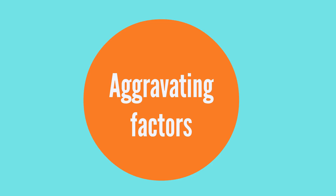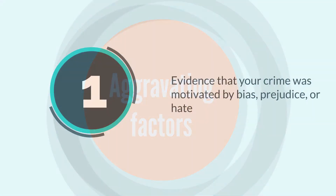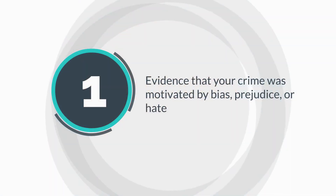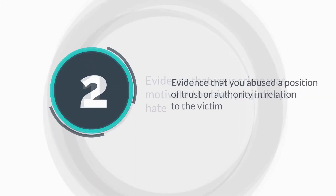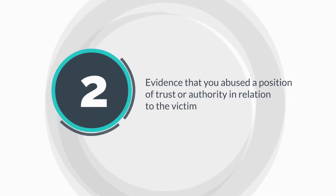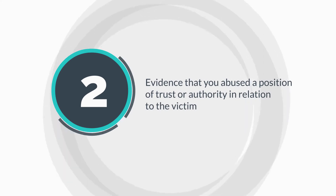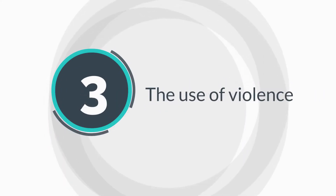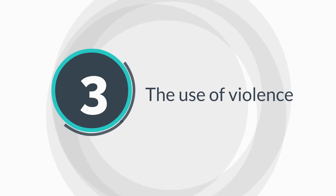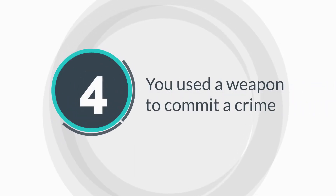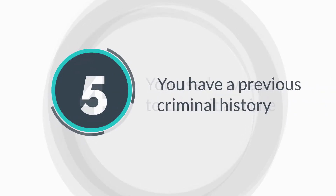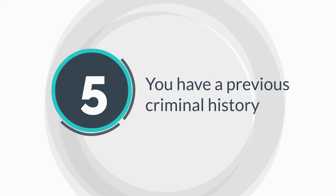Aggravating factors could include the following: first, evidence that your crime was motivated by bias, prejudice, or hate; second, evidence that you abused a position of trust or authority in relation to the victim; third, the use of violence; fourth, you used a weapon to commit a crime; and fifth, you have a previous criminal history.